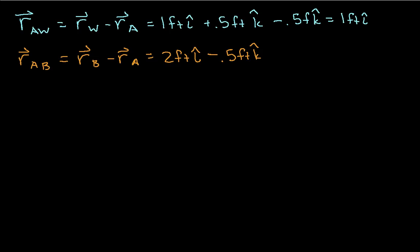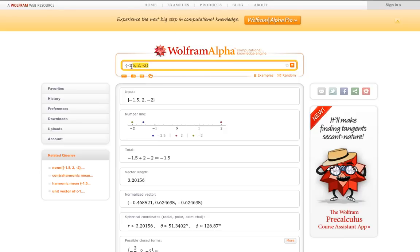So let's get the moment due to the weight. This moment is R_AW cross the weight vector, and the weight vector is minus 10 pounds j hat. This is the displacement, or the relative position vector. So now we need to compute R_AW cross minus 10 pounds. So we can go to Wolfram Alpha.